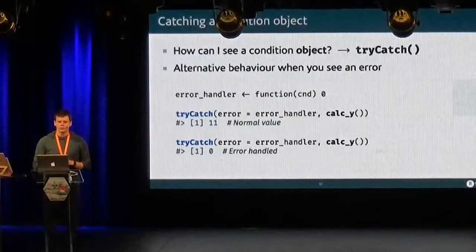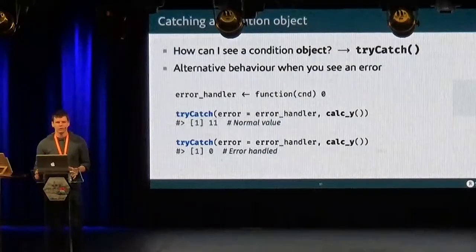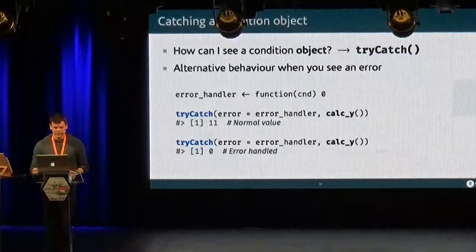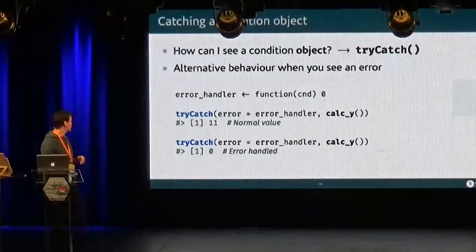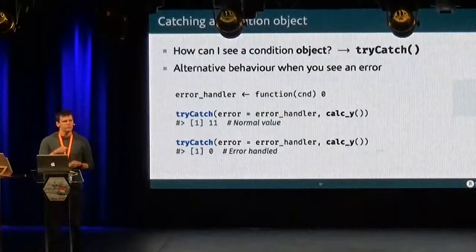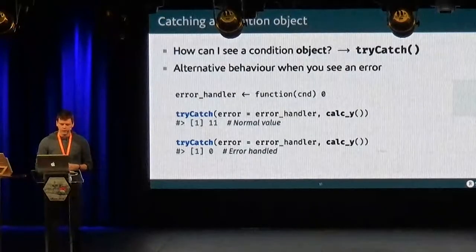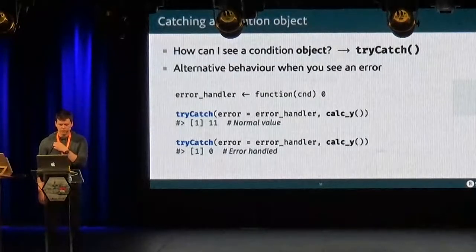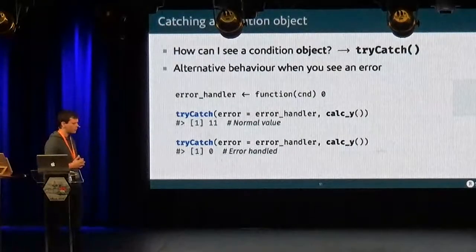And so how can you see a condition object? Well, with try-catch, which is a base R function that allows you to provide an alternative behavior when there is an error. And so it works like this. You define an error handler. Here it's a simple function that always returns zero. And then you use try-catch with error, I call my handler, and you call whatever R code you want. And so if there was no error, you get the normal results, which is eleven in this case. And if there was an error, then the handler is called and it returns zero.